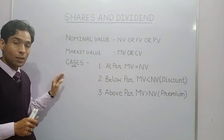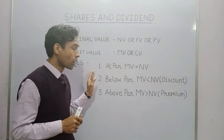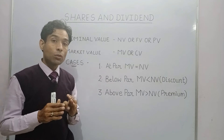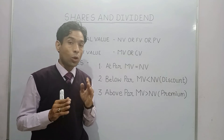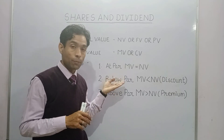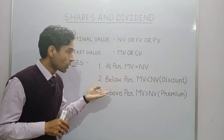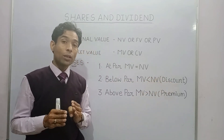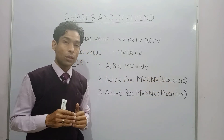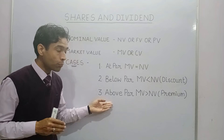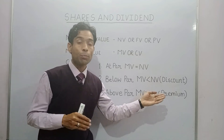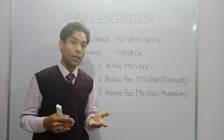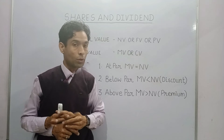There are three cases. Case one: at par — when the market value is equal to the nominal value. Case two: below par, also called at discount — when the market value is less than the nominal value. Case three: above par, which is at premium — when the market value is greater than the nominal value.